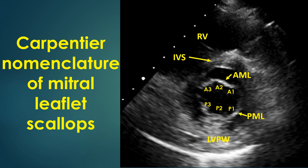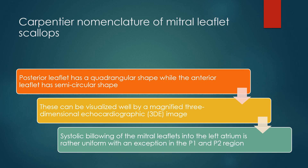Normal mitral valve in parasternal short axis view shows: RV — right ventricle; IVS — interventricular septum; AML — anterior mitral leaflet; PML — posterior mitral leaflet; LVPW — left ventricular posterior wall. Two indentations and three scallops of the posterior mitral leaflet are seen. The posterior leaflet has a quadrangular shape while the anterior leaflet has a semicircular shape, which can be visualized well by a magnified three-dimensional echocardiographic image.